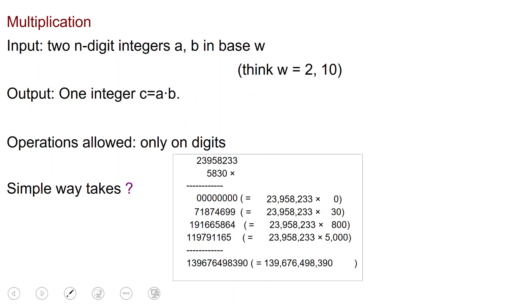What about multiplication? Here again the input are two n-digit integers a and b in some base w, think for example w equals 2 or 10. And the output is one integer c which is a times b. Again, we only allow operations on digits.